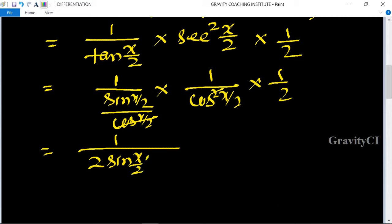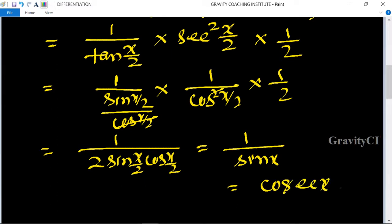Using the identity 2sin(x/2)cos(x/2) = sin x, this equals 1/sin x = cosec x, which is the required answer.